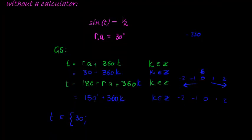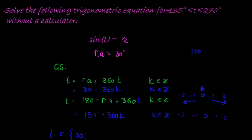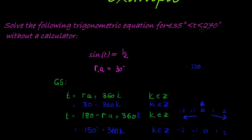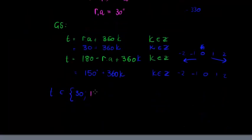Looking at the second one, let's start with k equal to 0. If k is equal to 0, then I have 150, which is perfect. 150 still falls as less than 270, so 150 degrees is one solution.